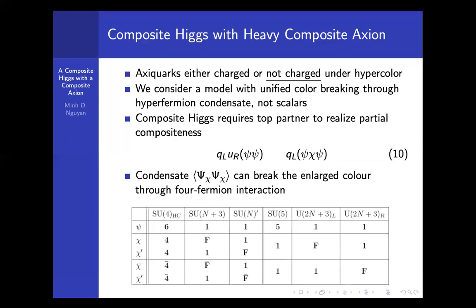When the color is enlarged, χ also has to be enlarged into SU(N+3). It turns out that the ψχ bound state can actually break the enlarged color through some four-fermion interaction.